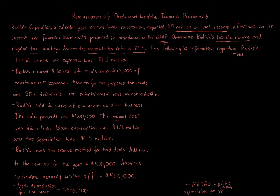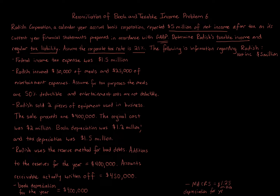There are differences between tax law and accounting rules — permanent and temporary differences. Temporary differences will equal out over time; permanent differences will never reverse. You go through each line item, asking how it was treated for book purposes and then for tax purposes.